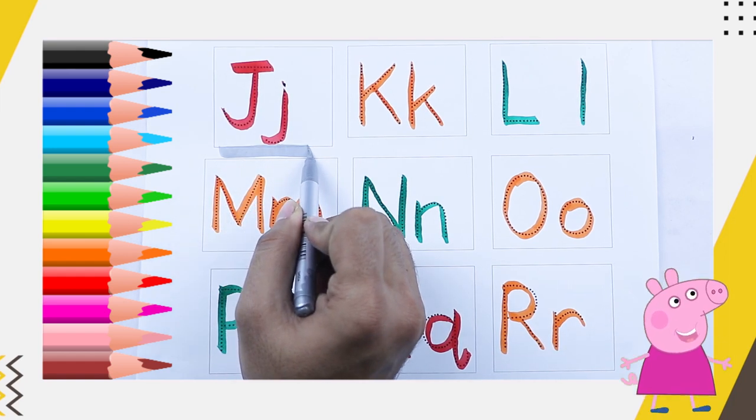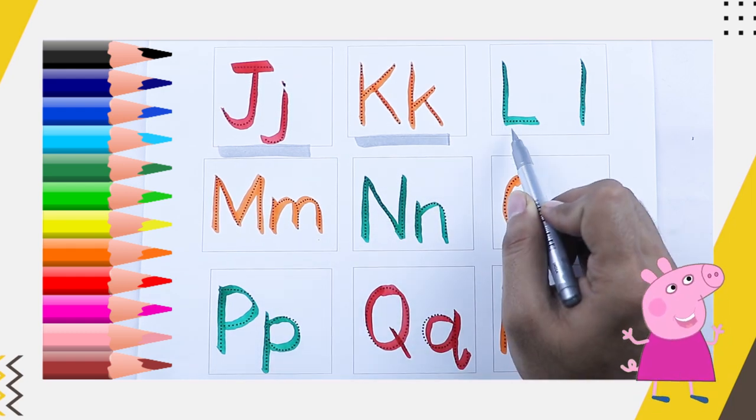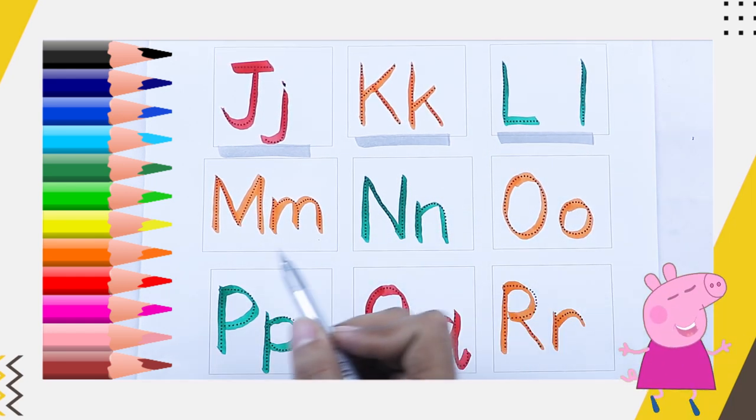Red color J, J for jag, orange color K, K for kite, green color L, L for lion.